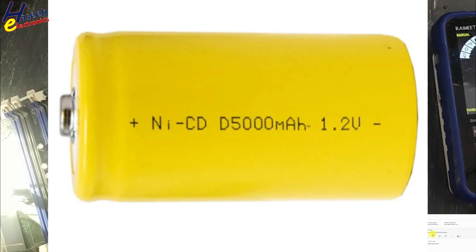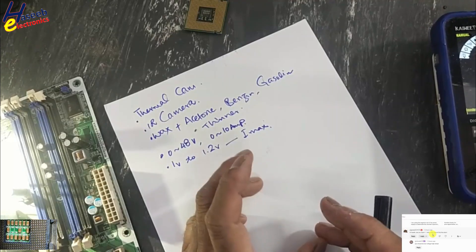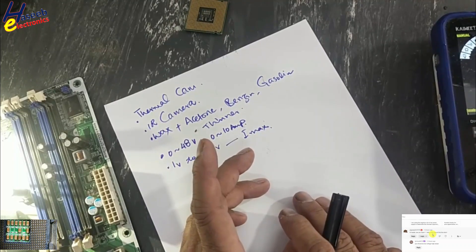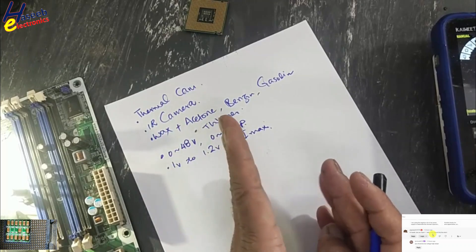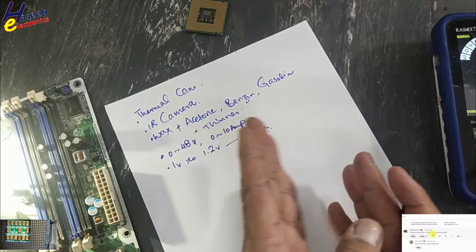We can also use 1.5 volt D-size battery cells, or we can use 1.2 volt D-size rechargeable cells. That is also an excellent option. You can join two or three cells together in parallel. That will create 1.2 volt or 1.5 volt with I think five, six amperes at a time.